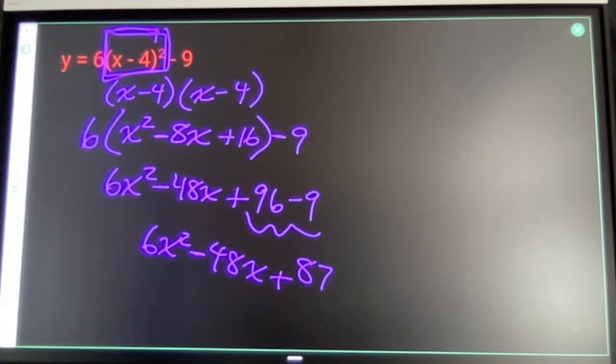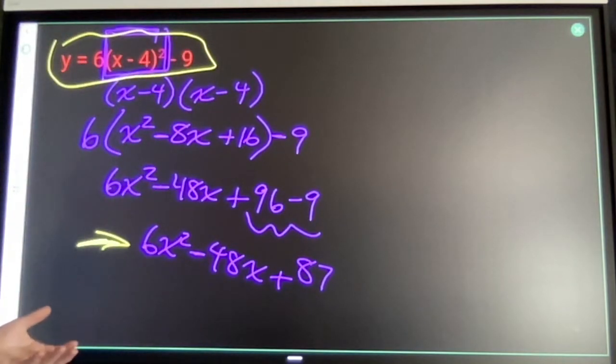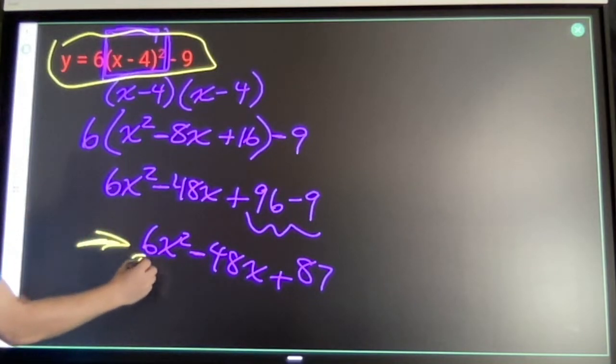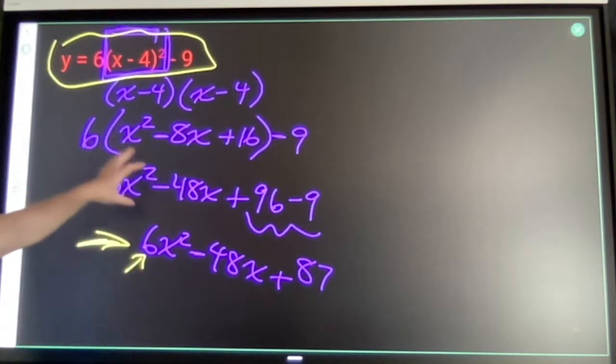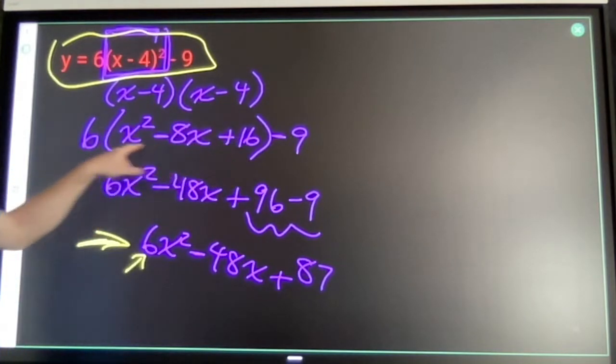Now, if I want to move backwards, start with this and move to something like this. You can kind of see what you would have to do is extract this 6 out, and then kind of mess with our numbers so that we can get a perfect square here.